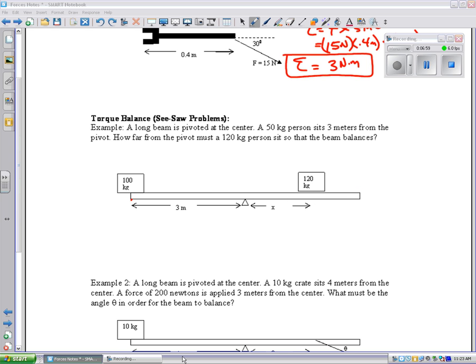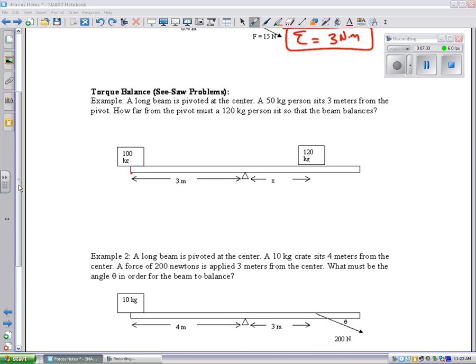Now, looking at this particular one, I have a 100 kilogram weight on one side, or a person, and I have a 120 kilogram person on the other side. And, I want to know how far out the 120 kilogram person has to sit in order to balance the 100 kilogram person. I always identify that pivot point because I want to calculate all my torques from that pivot point.